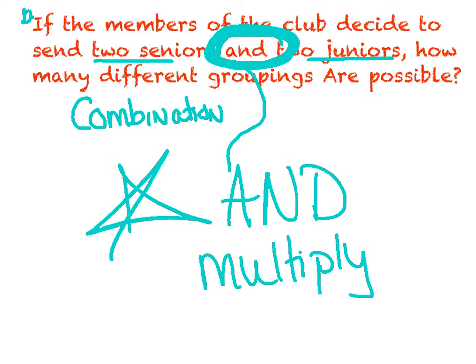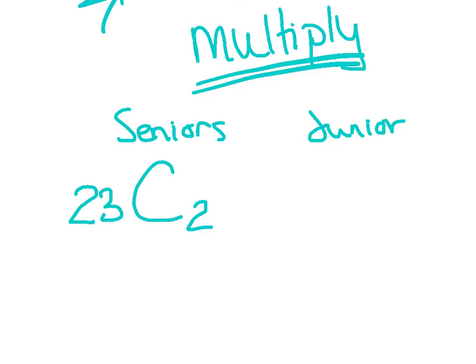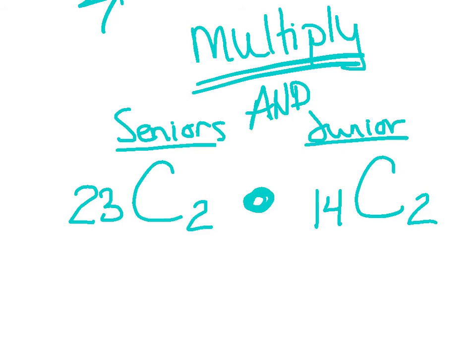So I have to write two separate combinations and then multiply them together. So let me first write the one about the seniors. So I believe we had 23 seniors, so I have 23 seniors to choose from and I want to choose two. And then I have one for juniors. I believe we had 14 juniors and I want to choose two. And since I want the seniors and juniors, that big word and means to multiply these two answers. Now you can type all of this in straight on one line or you can do them separately. It doesn't matter. I say why the heck not just type it all in on one line and I've got 23,023. Different ways I can pick two seniors and two juniors.